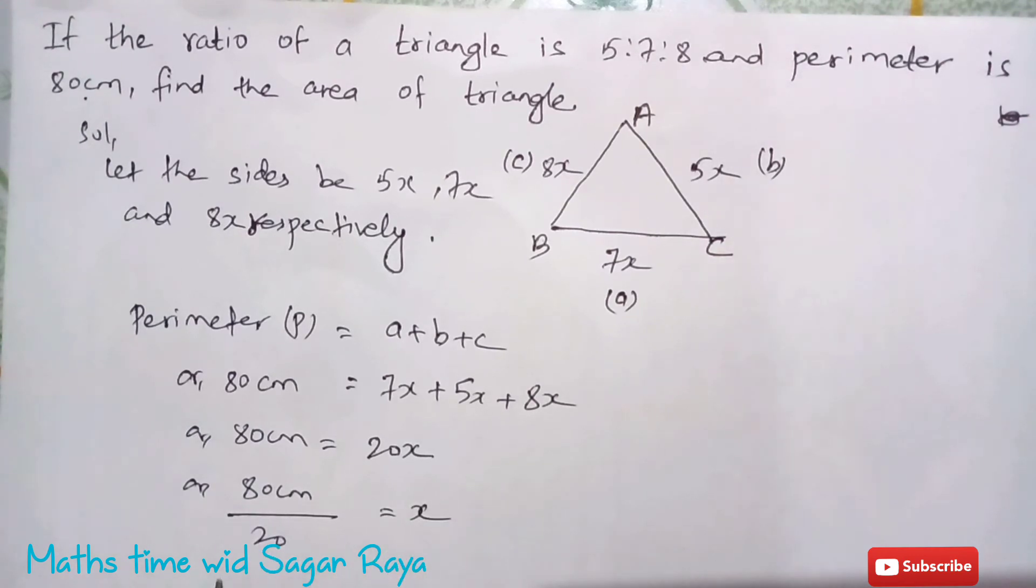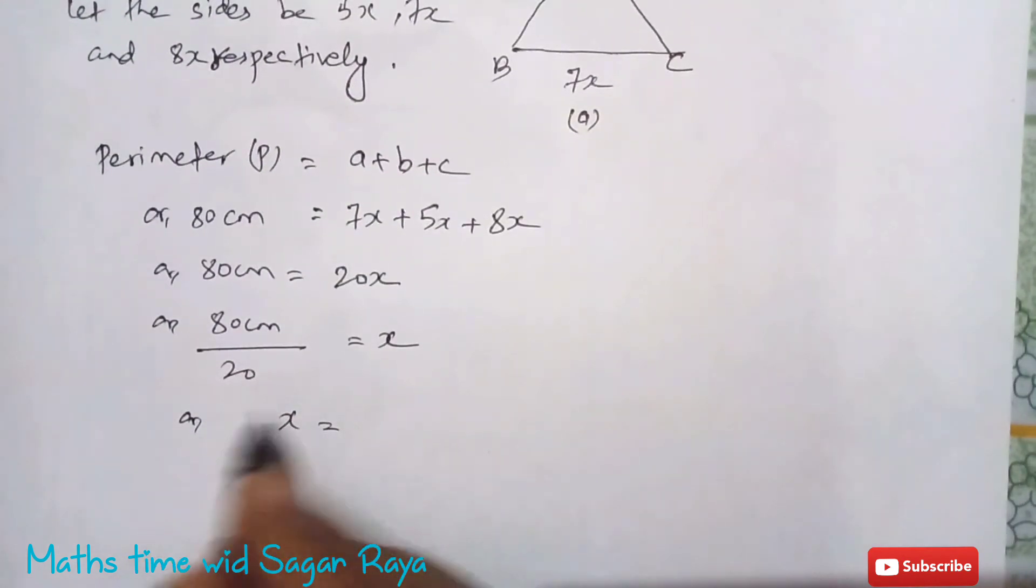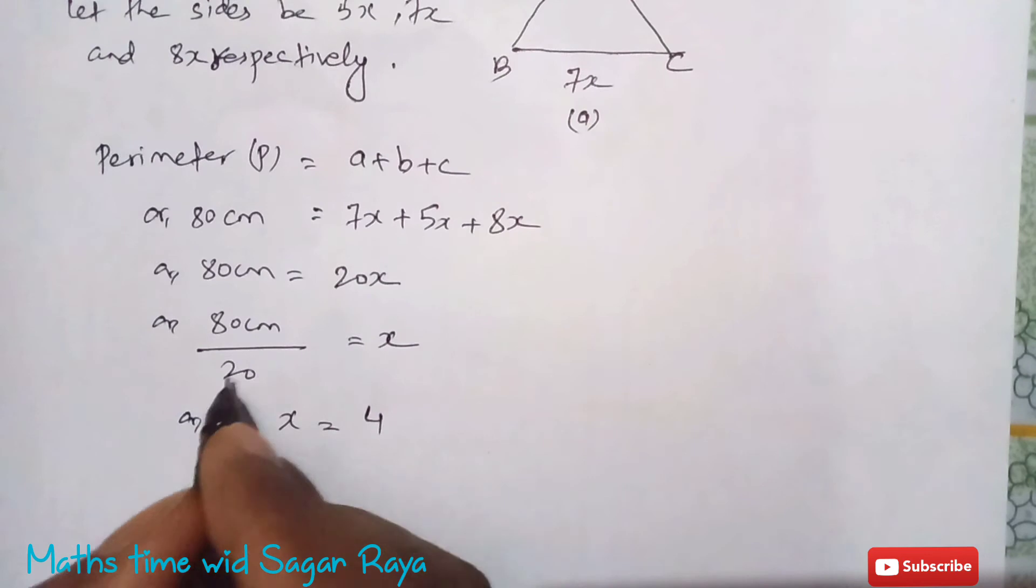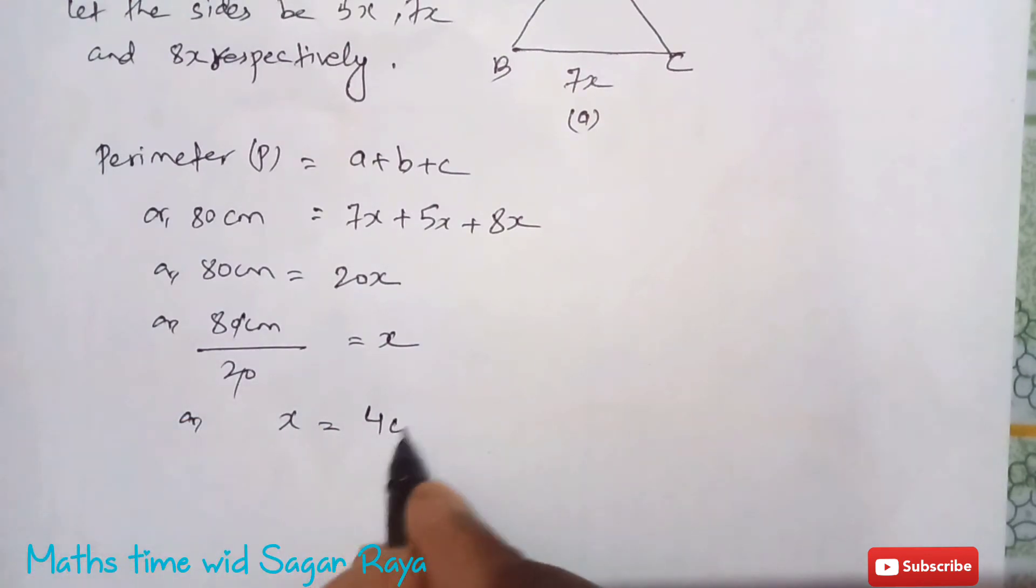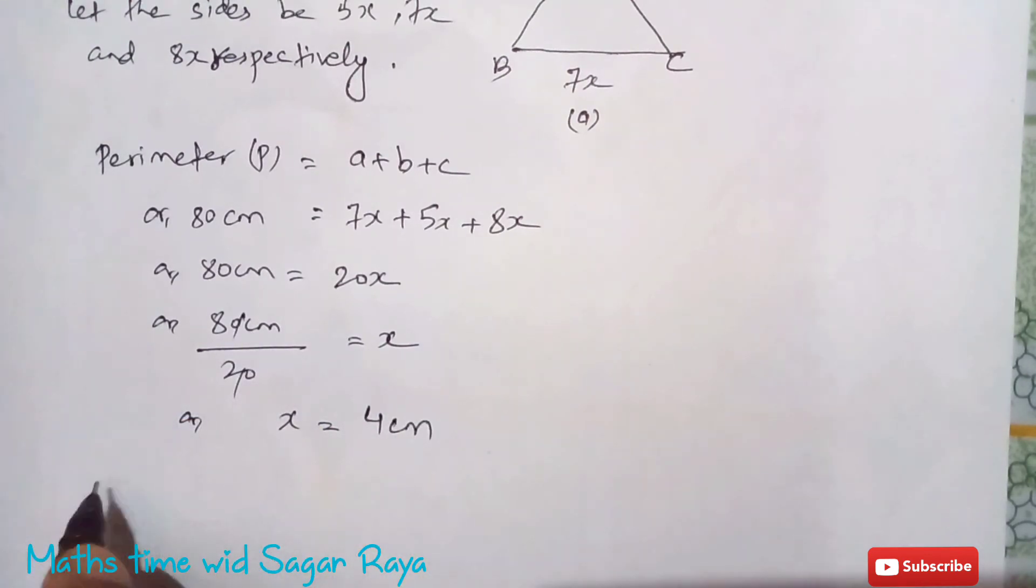Or x equals to, if you just divide this you will get, 80 divided by 20 cancel to 4, x is 4 cm.